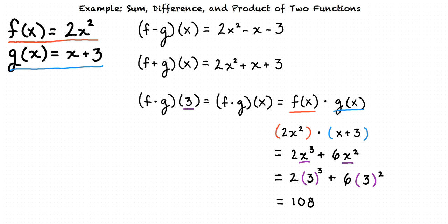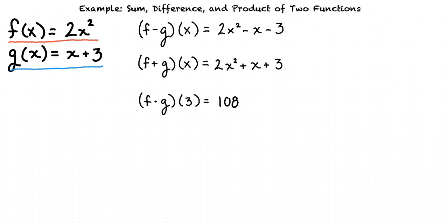The final answers for this problem are f minus g of x equals 2x squared minus x minus 3, f plus g of x equals 2x squared plus x plus 3, and f times g of 3 equals 108.